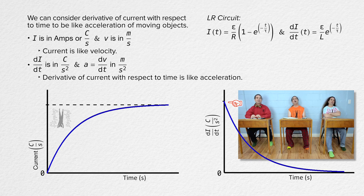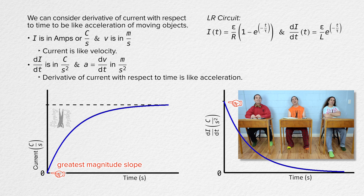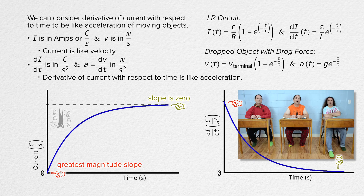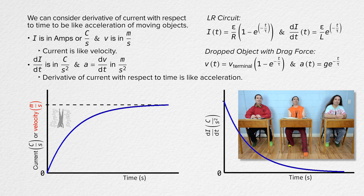At the very beginning, the time rate of change of current is at its maximum value because the current is experiencing its greatest change with respect to time — the slope of current with respect to time has its greatest magnitude. And at the very end, the current is not changing, so the time rate of change of current as a function of time is zero. These graphs are exactly the same as the graphs for velocity and acceleration as a function of time for a dropped object which experiences a drag force. The shape of the velocity curve is exactly the same as the current curve, and the shape of the acceleration curve is exactly the same as the time rate of change of current curve.